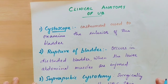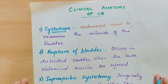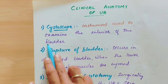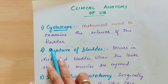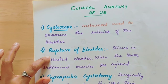Now coming to the clinical anatomy of the urinary bladder. First point: cystoscope. A cystoscope is a long and flexible instrument that is inserted through the urethra into the urinary bladder. It is a device used to examine the interior of the bladder.